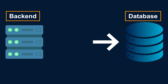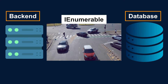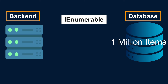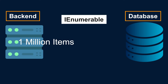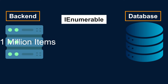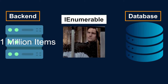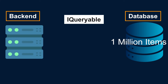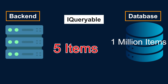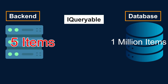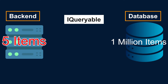When we use iEnumerable, we receive a list of all the data — and the data could be 1 million items from the database. We get all 1 million items, save them in our program memory, and then select what we need. This has a huge cost because we don't need all of them. On the other hand, iQueryable allows us to select just the items we want, executing the selection on the database and only retrieving those items. So instead of getting all 1 million items, we just receive 5 items. Our response will be faster — this has better performance. This is the most important difference between iEnumerable and iQueryable.